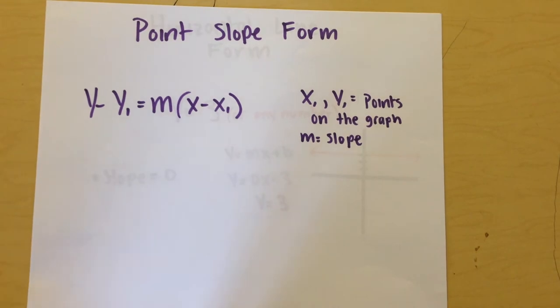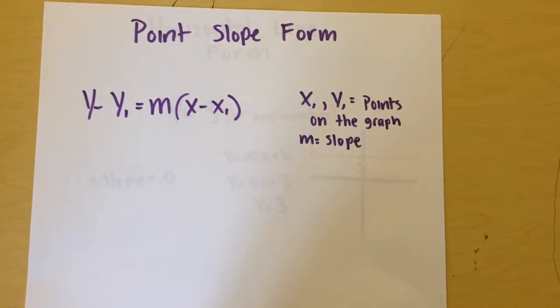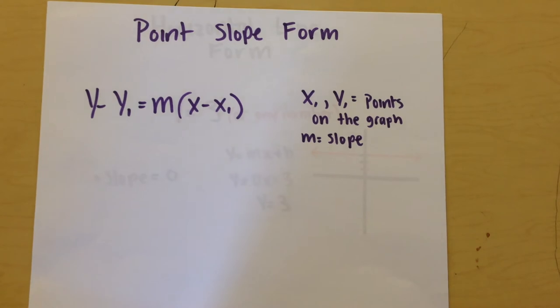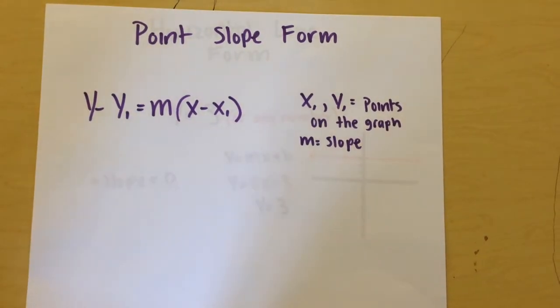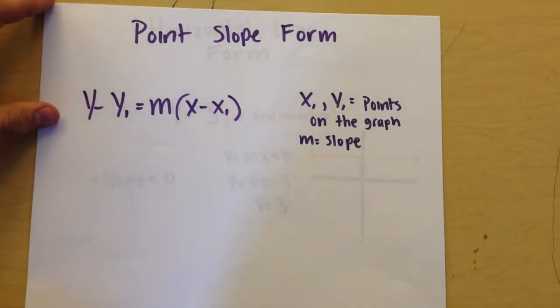Where X1 and Y1 are X-coordinates and Y-coordinates of one point on the graph that involves the line, and M is equal to the slope.